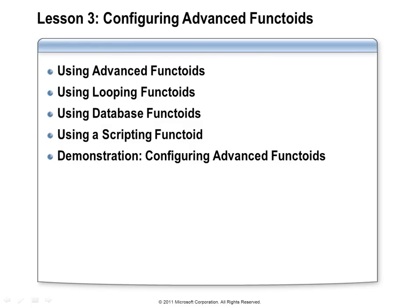Using links, basic functoids, and the BizTalk map compiler's automatic looping, we can create very useful maps. But you may encounter situations where those features aren't sufficient. In that case, check out the collection of advanced functoids available in the BizTalk mapper toolbox. These can help you create looping constructs, perform database lookups, and write custom mapping rules with script.